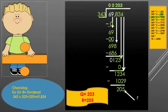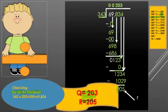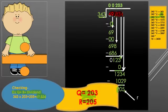So the answer is: quotient equals 203 and remainder is 205. Now, how do we check whether our answer is correct? Using the formula: divisor multiplied with quotient plus remainder equals dividend. So 343 multiplied by 203 plus 205 gives 69,834. Comparing with the dividend 69,834, our answer is confirmed correct. Our long division method is correct.